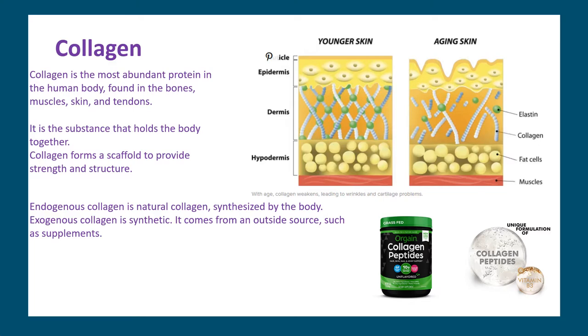Proteins are high molecular weight compounds that do a wide variety of functions, classifiable into two major categories. One is the static or structural function — proteins act like brick and mortar in a building, providing structure and strength to the body. For example, collagen and elastin are found in our bone matrix, vascular system, skin, and tendons; collagen forms a scaffold to provide strength and structure to our skin.